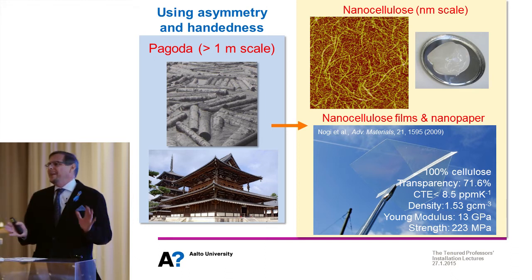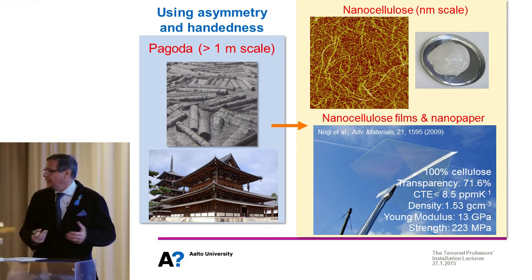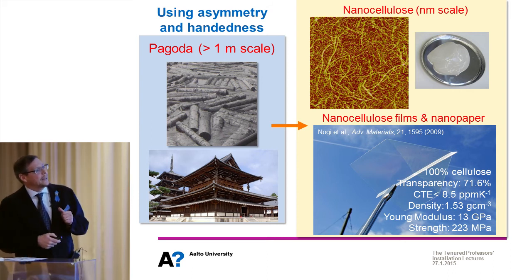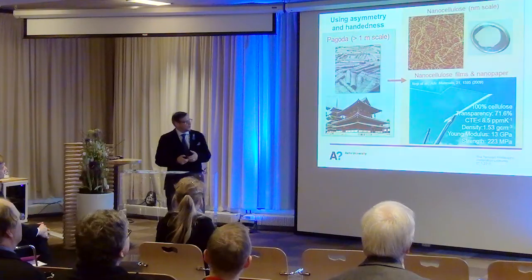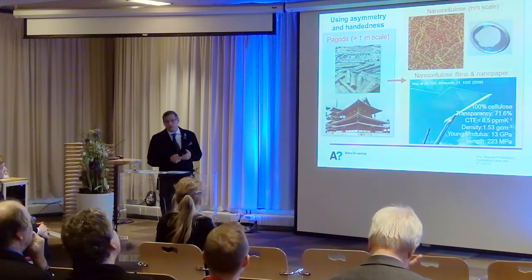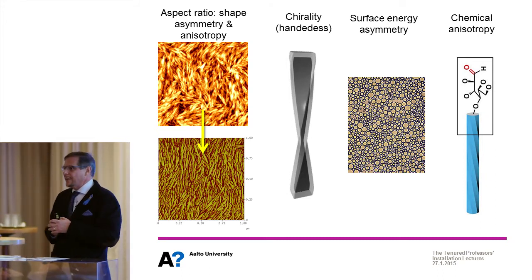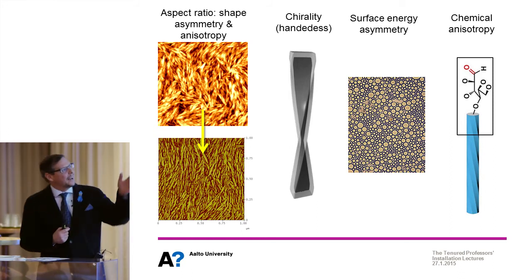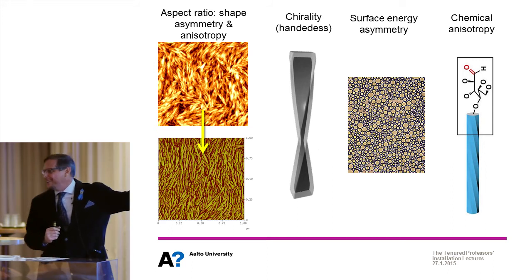I hope I have convinced you that there is really a connection between pagodas and nanopaper. In pagodas, we're looking at meter scales from logs that we assemble in given structures. But if we take this and deconstruct those materials to the nanoscale, we obtain nanomaterials that can be used to produce films, nanopapers, and others. The nanopaper or film of nanocellulose is highly transparent and extremely strong. To recap: we have checked anisotropy as far as the aspect ratio of materials — they are long and thin. The chirality or handedness. The surface energy asymmetry. They are different on one face versus the other. As well as the chemical anisotropy. These are things that are not obvious to us when we see a tree, but now I hope that when you see a tree, you remember the anisotropy in these natural materials.